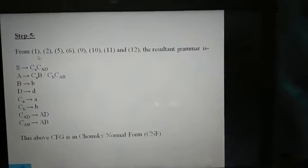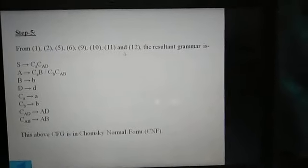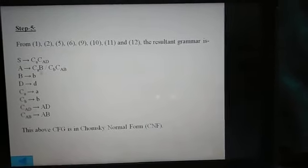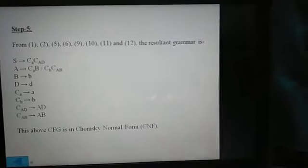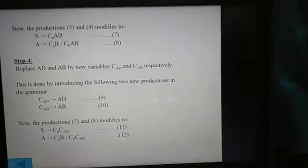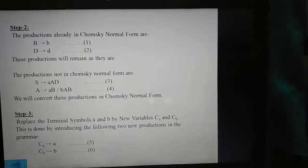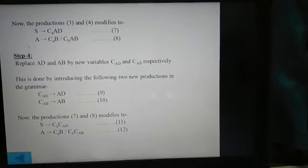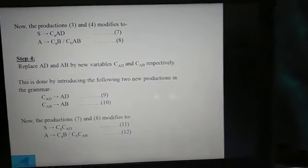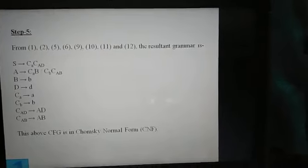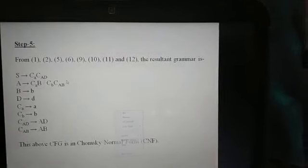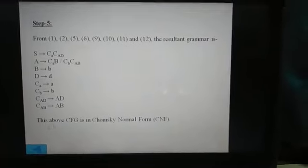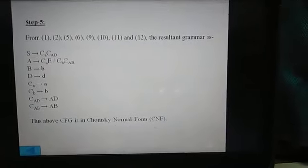In the final step, we collect all productions that are in Chomsky Normal Form to form the resultant grammar. Productions 1, 2, 5, 6, 9, 10, 11, and 12 together constitute the final grammar. Productions 1 and 2 were already in CNF; productions 5, 6, 9, and 10 introduce the required single-terminal and two-variable forms; and productions 11 and 12 replace the earlier multi-symbol right-hand sides. The resulting context-free grammar is now fully in Chomsky Normal Form.